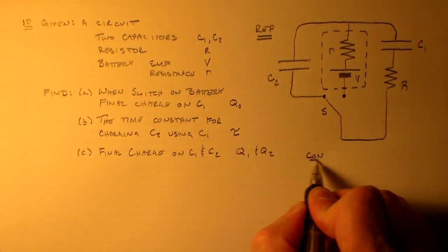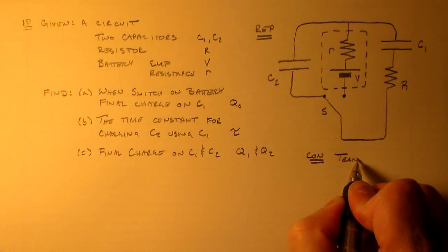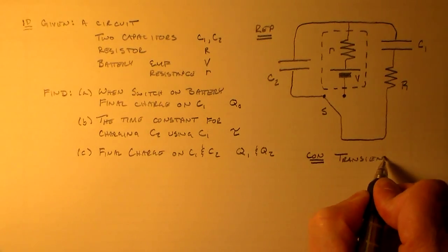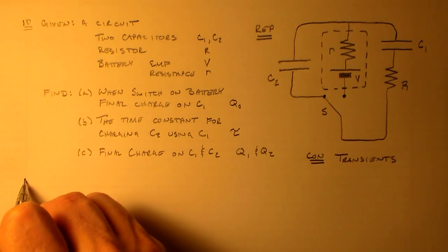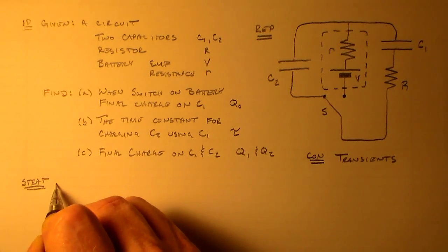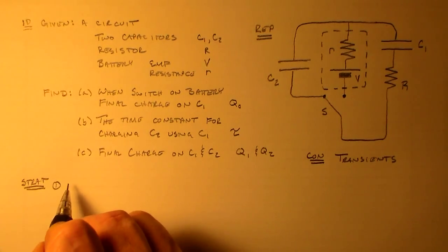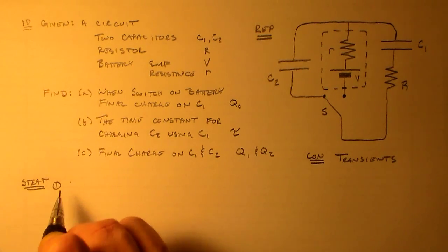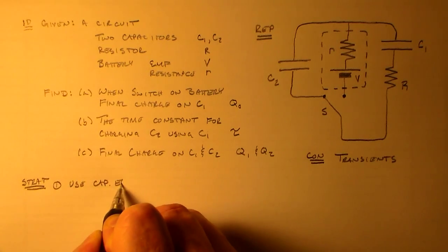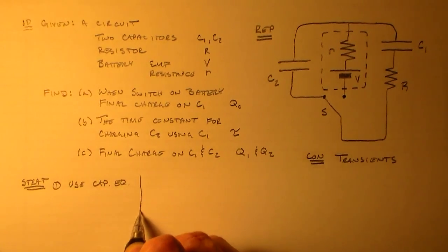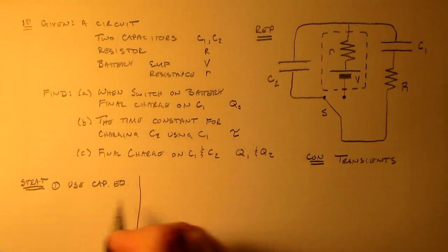Given a circuit, and we've got two capacitors with capacitance C1 and C2. A resistor with a resistance R. A particular, a single battery with EMF V and resistance, an internal resistance, little r. And what would we like to find now? I'd like to find a few things.